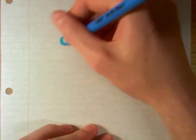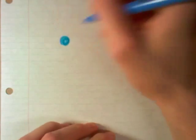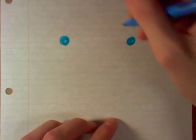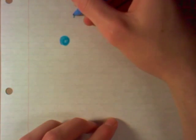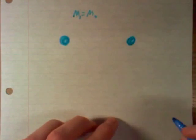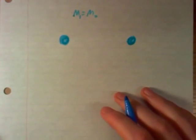So say we have ball one here and ball two here, and they have the exact same mass. So the masses are equal of one and two.